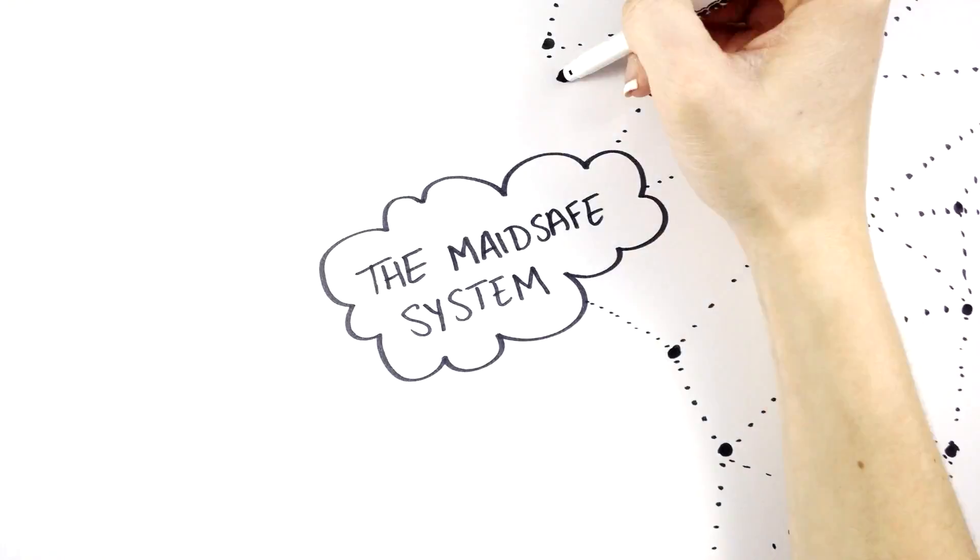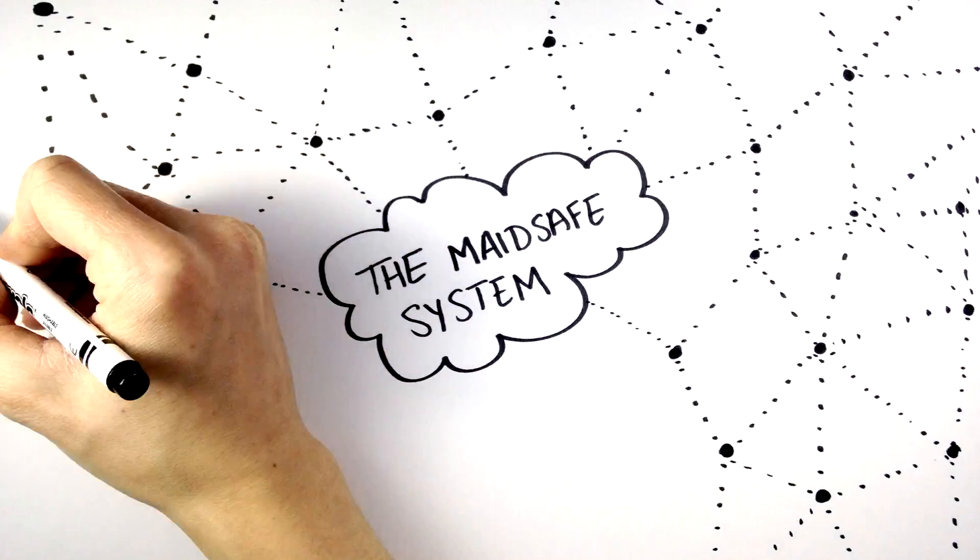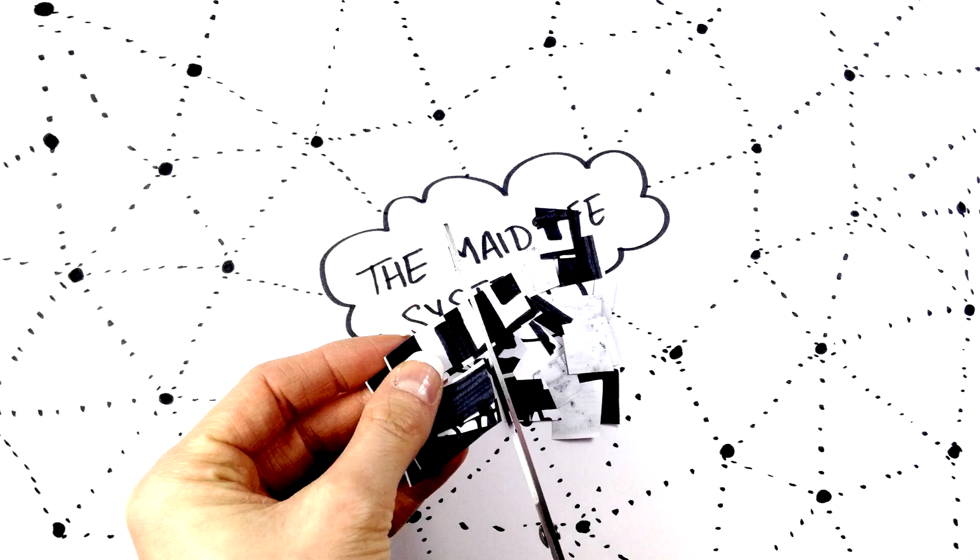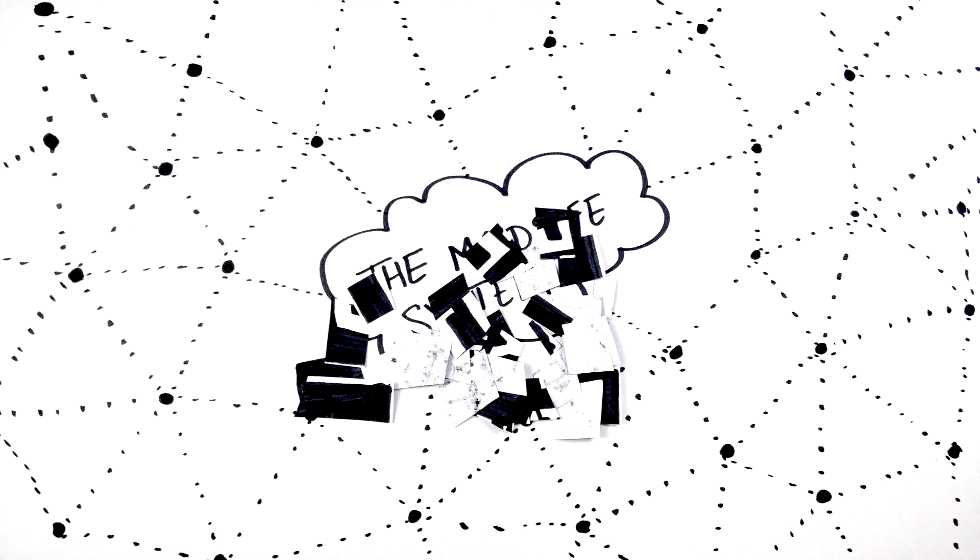As soon as a document is saved, remarkable things happen. The data is automatically shredded and encrypted by a unique algorithm that uses the data itself to create the encryption keys required for the very high levels of encryption.